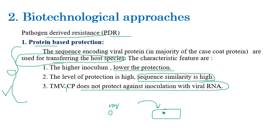Once the coat protein is inoculated into the host plant, if a virus attempts to infect it, the existing coat protein units trigger defense reactions, effectively immunizing the plant. The virus cannot uncoat or replicate inside the plant, so infection is reduced or completely checked. This is protein-based protection as a biotechnological approach.